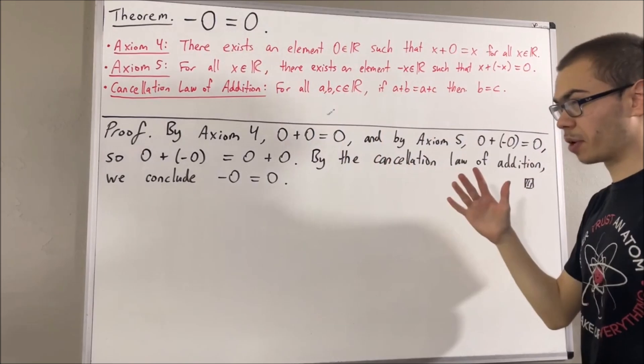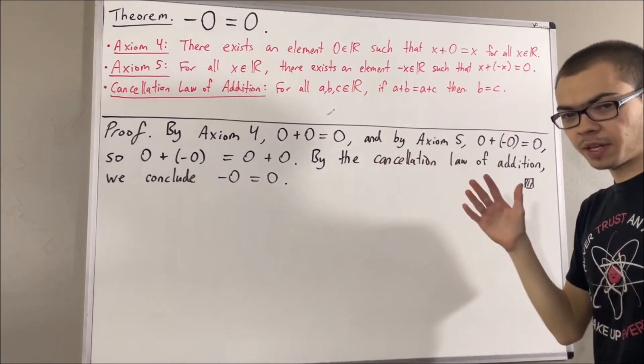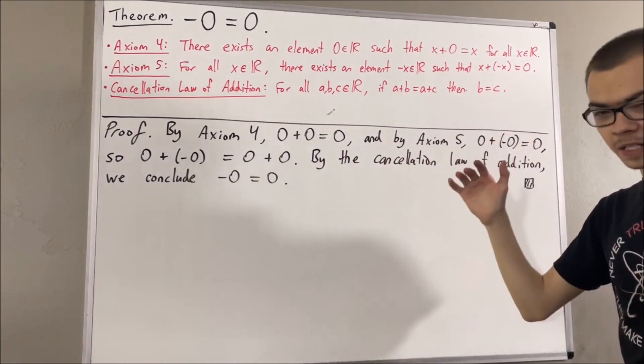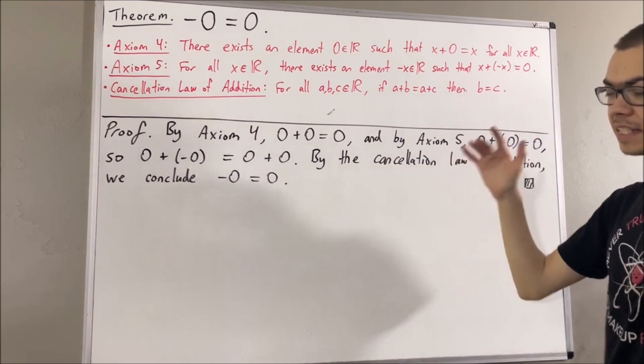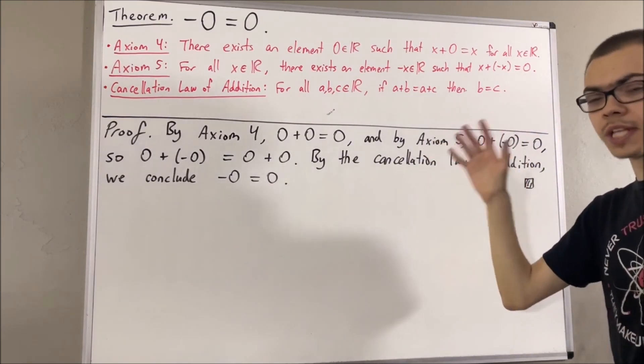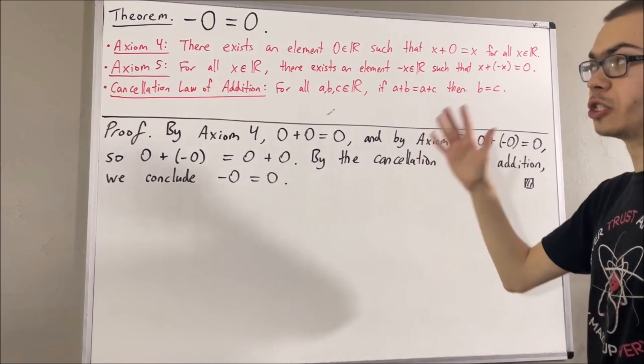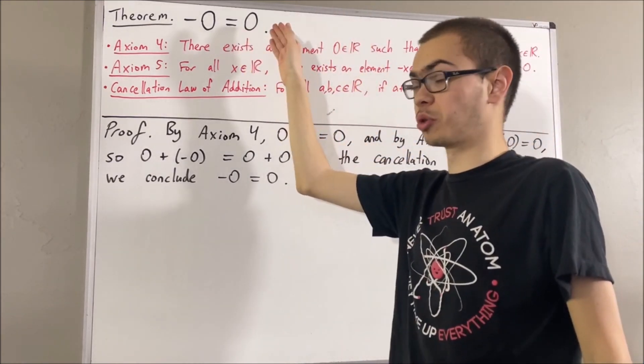But actually, at this point, that isn't obvious. And when I say it's not obvious, it's not obvious in the sense that axioms 1 through 7 are not enough to prove that zero is the only real number with this property.